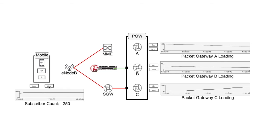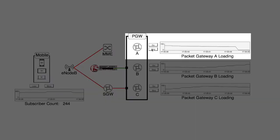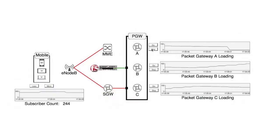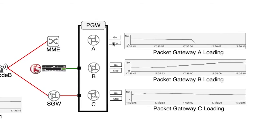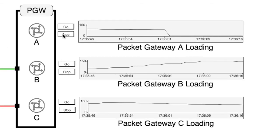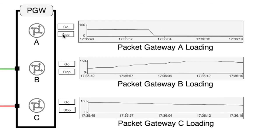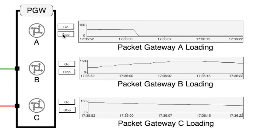Now that the loading has stabilized, one of the gateways will be removed. By disabling the packet gateway, the BigIP determines the load should no longer be placed onto this gateway and should be redirected to the remaining gateways. It can now be seen that the loads on the remaining two gateways are significantly higher than when the traffic was spread among all three gateways.